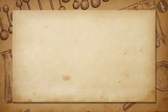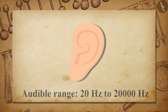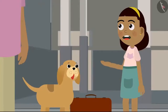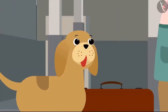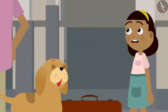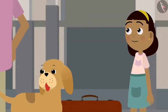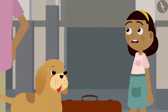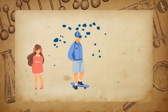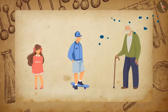A human ear has an audible range of sound from about 20 Hz to 20,000 Hz. Children under the age of 5 and some animals like dogs have an auditory range of up to 25 kHz. People become less sensitive towards higher frequencies as they grow old.